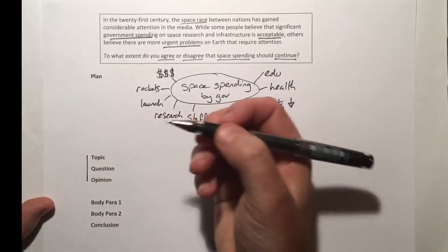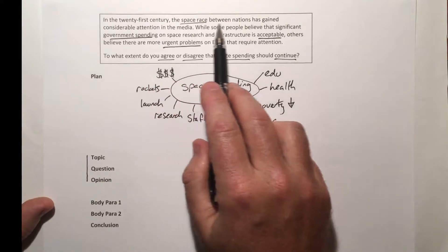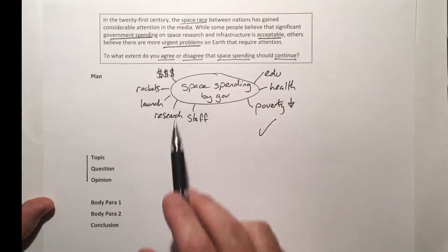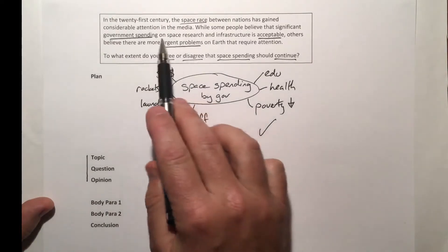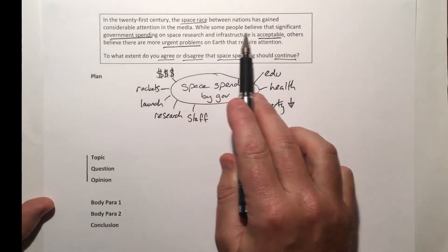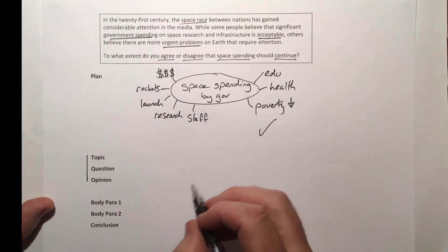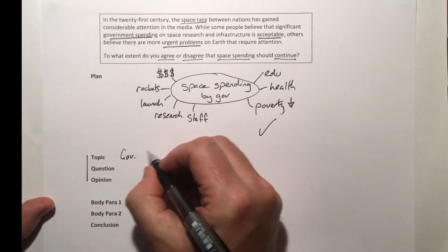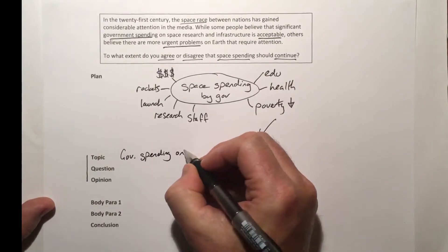If we start to think about our introduction, we know that this information goes into the introduction. We can have three or four sentences that state these pieces of information, but let's find what the information is first. The topic is usually found in the first sentence or two. Really, the key topic is significant government spending on space projects.